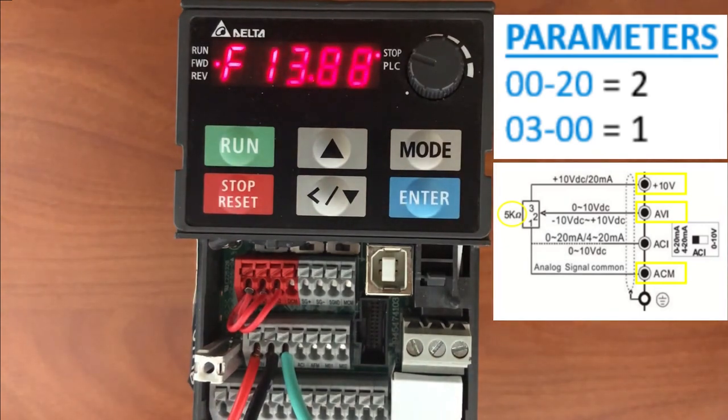When you adjust your potentiometer, you should be able to see your frequency reference change through the full range of the potentiometer.